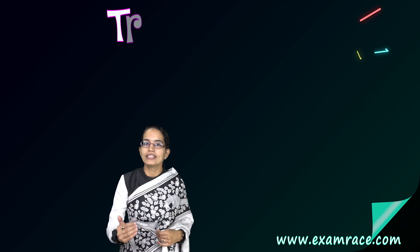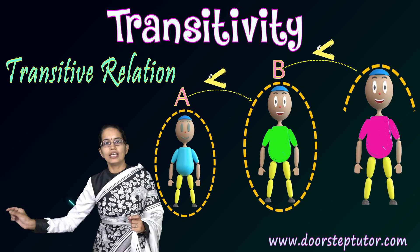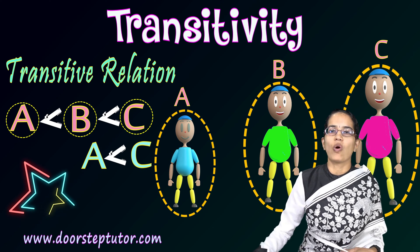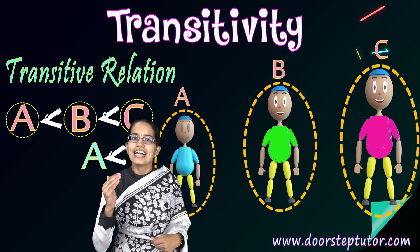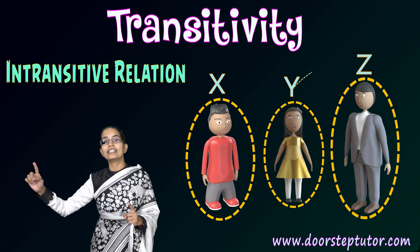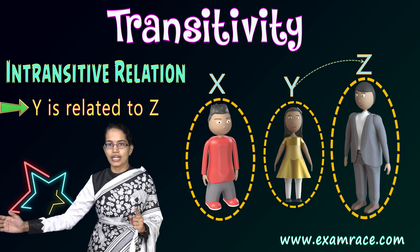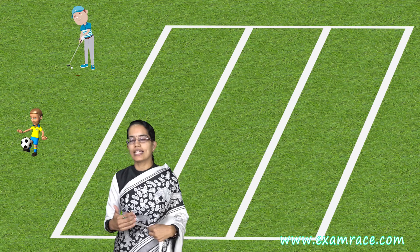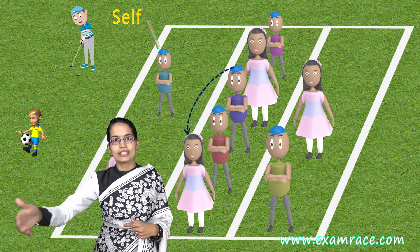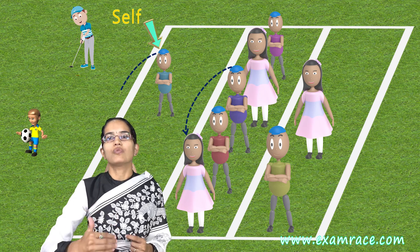The third relation is transitive. Transitive means if a is smaller than b, and b is smaller than c, then I can say a is smaller than c. So a < b and b < c, therefore a < c. The next is intransitive. Intransitive means if x is related to y and y is related to z, that does not mean x is related to z. For example, if I am next in line to person B, and person B is next in line to person X, that does not mean I am next in line to person X — that is intransitive.